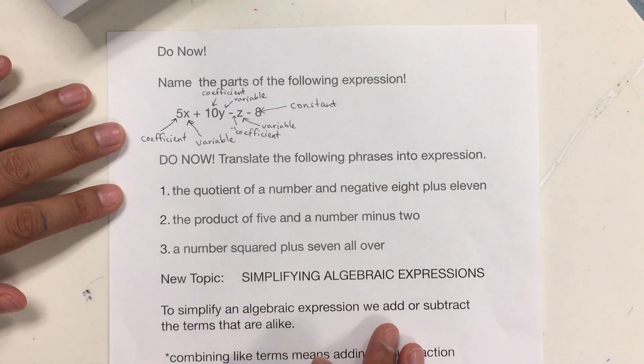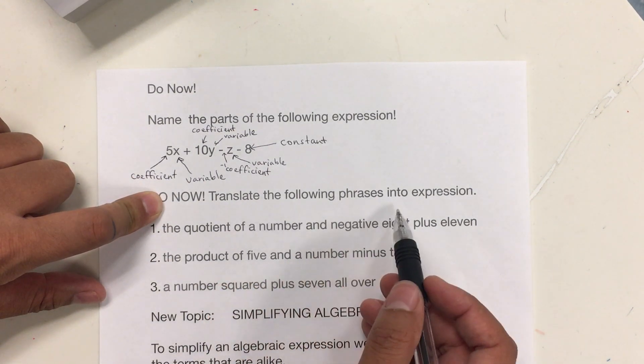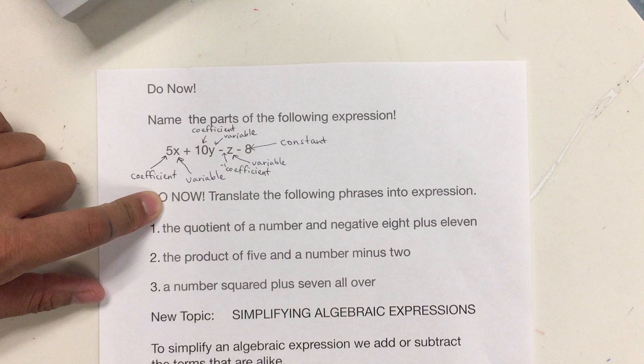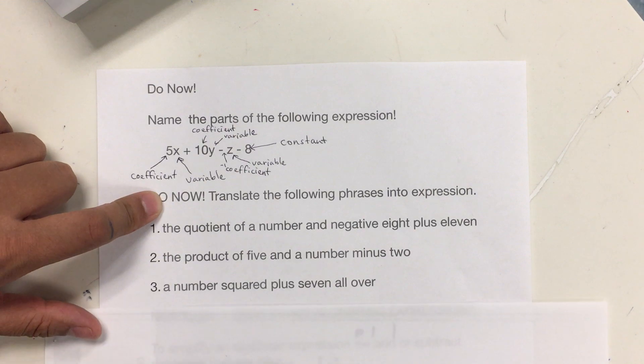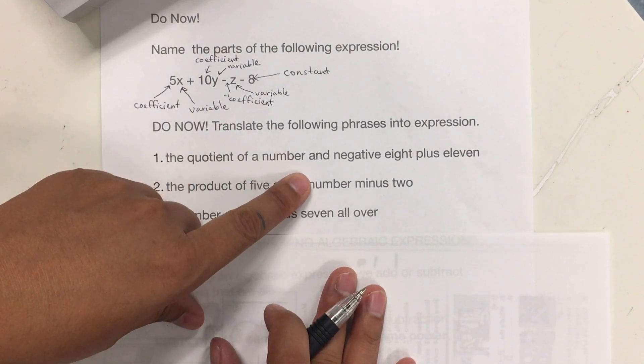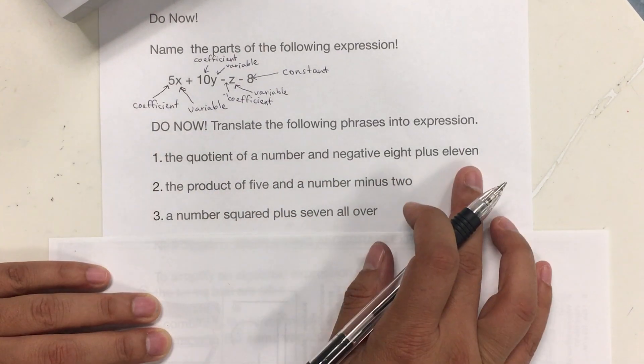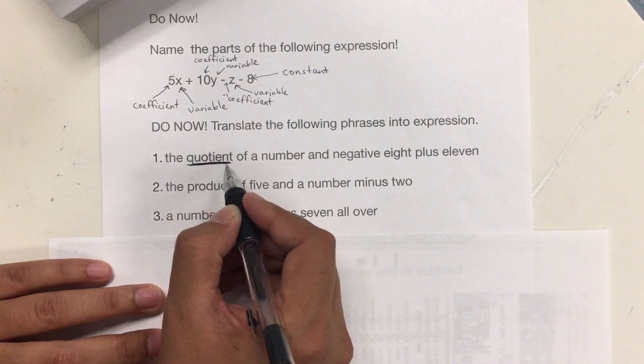For the next part, it says also do now, it says translate the following phrases into expressions. And so, it says the quotient of a number, a negative 8 plus 11. So, the quotient means division or the answer of the division.